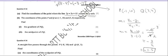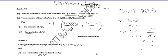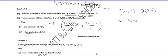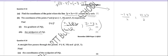The final part asks for the midpoint. Using (x1 + x2)/2, (y1 + y2)/2: (-1 + 3)/2 = 2/2 = 1, and (10 + 4)/2 = 14/2 = 7. So the midpoint is (1, 7).